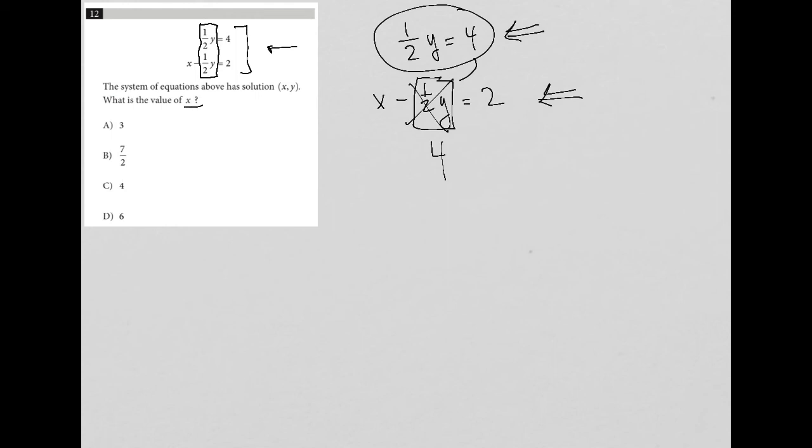So down in the second equation here I'm just replacing one half y with four. So that second equation turns into x minus four equals two. I add four to both sides and I get my answer of x equals six and therefore the final answer is choice d.